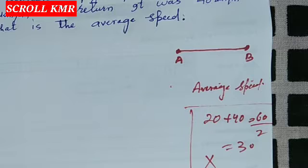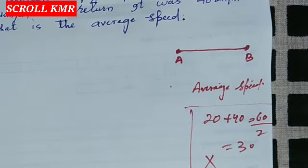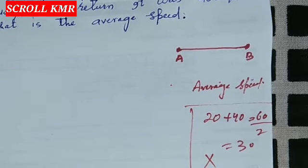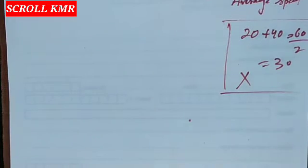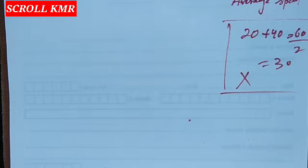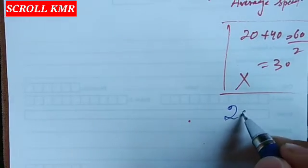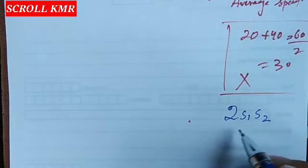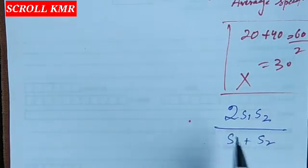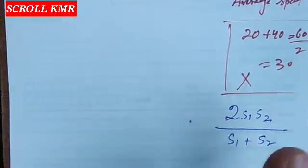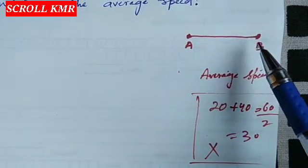A to B is 20, B to A is 40. 20 plus 40 divided by 2 — یہاں پہ جو answer ہے وہ غلط ہو جائے گا، یہ اس کا answer نہیں ہے۔ بلکہ اس کے لئے ایک formula ہمارے پاس ہوتی ہے۔ وہ formula ہے: 2 into s1·s2 divided by s1 plus s2 — جہاں s1 یعنی A سے B تک speed اور s2 یعنی B سے A تک speed۔